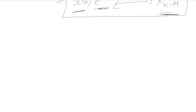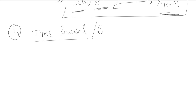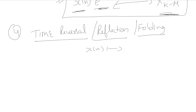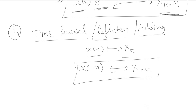The next property is time reversal, also known as reflection or folding. It is exactly the same as in continuous time Fourier series. If x[n] and x[k] are a Fourier series pair — x[n] is a periodic signal and x[k] is the corresponding coefficient — then x[−n] has the Fourier series coefficient x[−k]. This is the time reversal property of discrete time Fourier series.